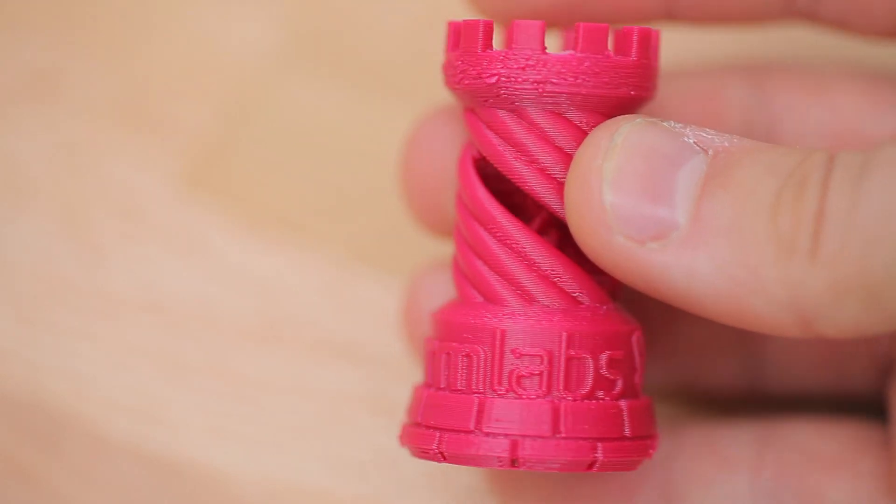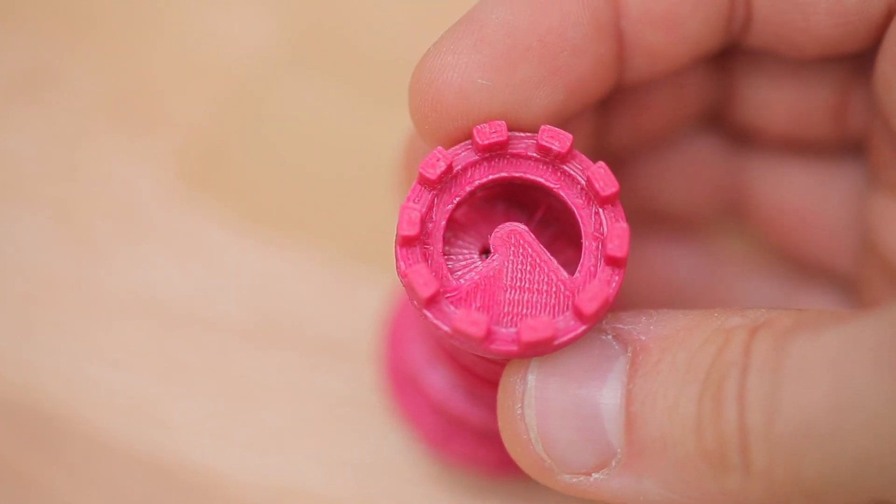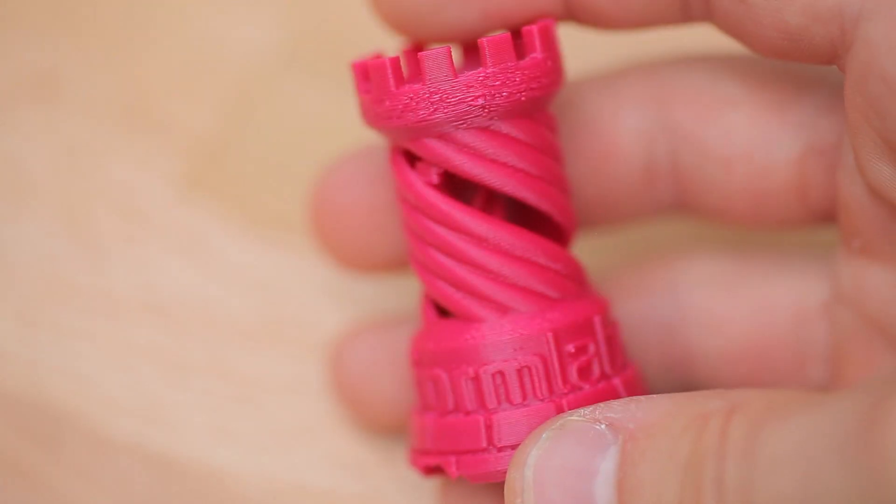The next part was printed from PLA on the Printrbot Simple Metal, and because I sliced it with Cura instead of Slicer, the font on the side turned out much better, but the font on the top is completely not there.